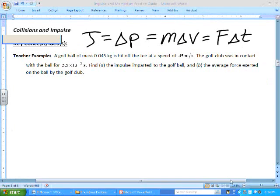Okay, so this example would be a golf ball getting hit off of a tee, the golf ball's mass being 0.045 kilograms, and then it's hit at a speed of 45 meters per second. The golf club was in contact with the ball for 3.5 times 10 to the negative third seconds, and we want to find A, the impulse of the golf ball during the hit, and B, the average force applied to the ball. So let's start with a picture.